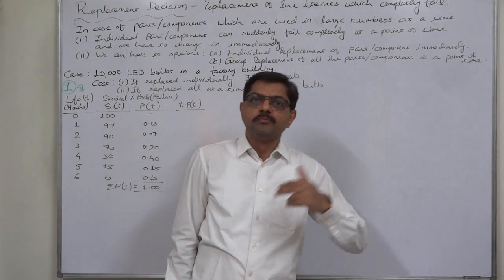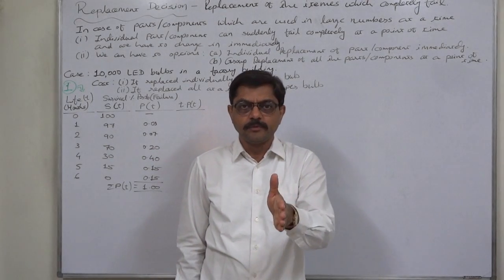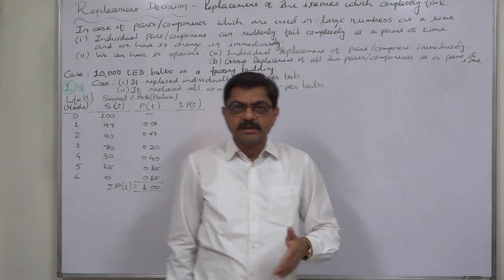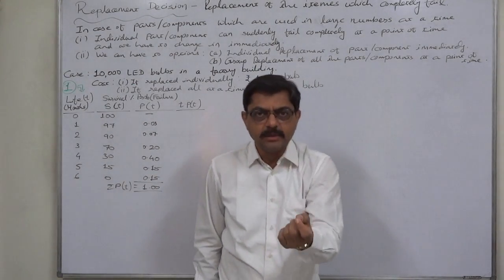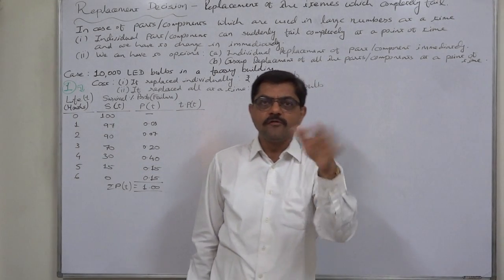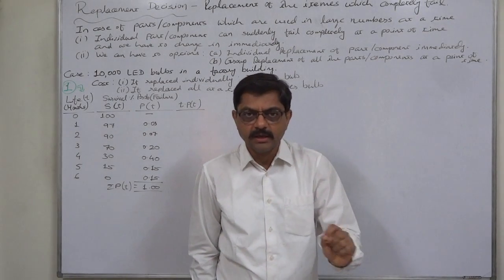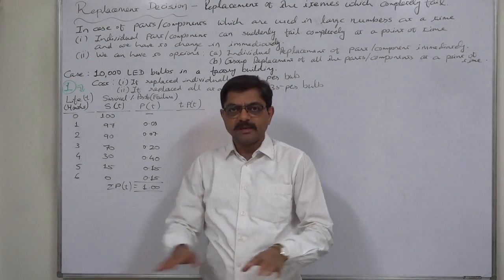In this kind of asset, we have two alternatives: individual replacement and group replacement. We have to use both the policies, but the question is when to stop using the individual replacement policy. If any one bulb fails at a time, we should not go for replacing all 10,000.